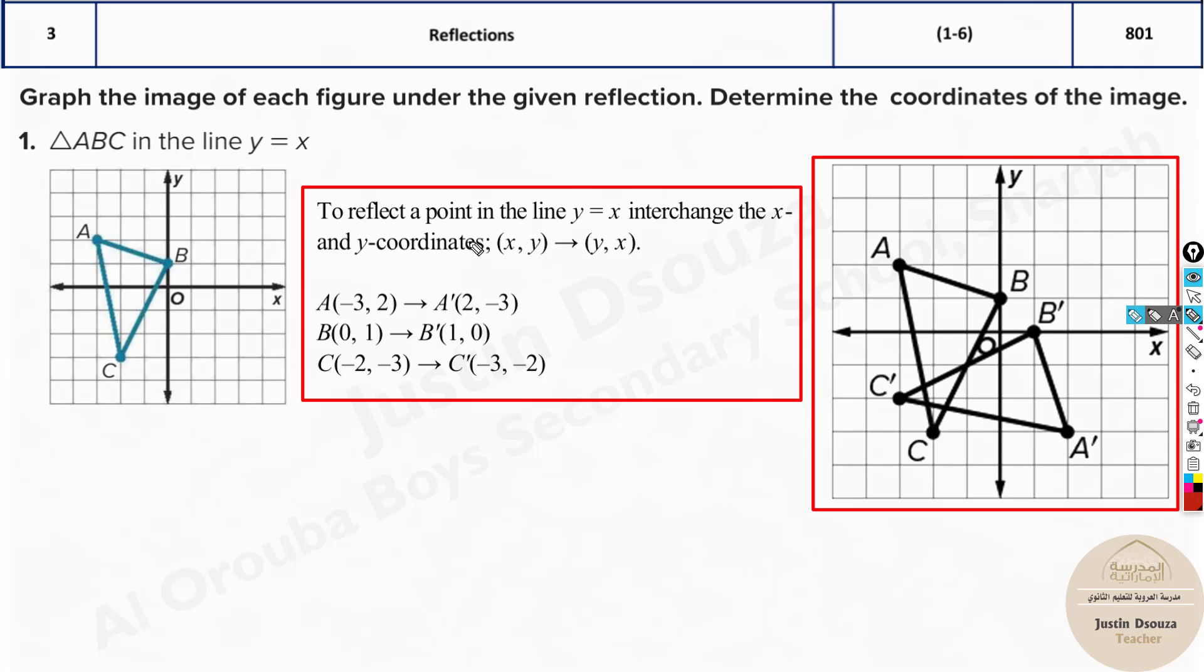So what I would suggest to you is in the exam when you see the question and you will have four graphs like this as the answers, take one point, the easy point. See this one, it is 0 and 1. Now check for all the graphs which is having 1 and 0 as your answer for b prime. So like that, you can eliminate many graphs. And once eliminated, check for one more point and easily you can get the answer. Or you can do all the three points and check it out.